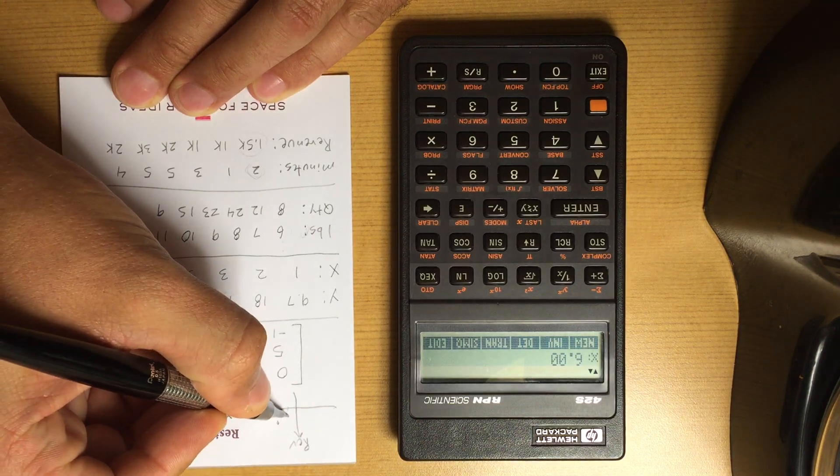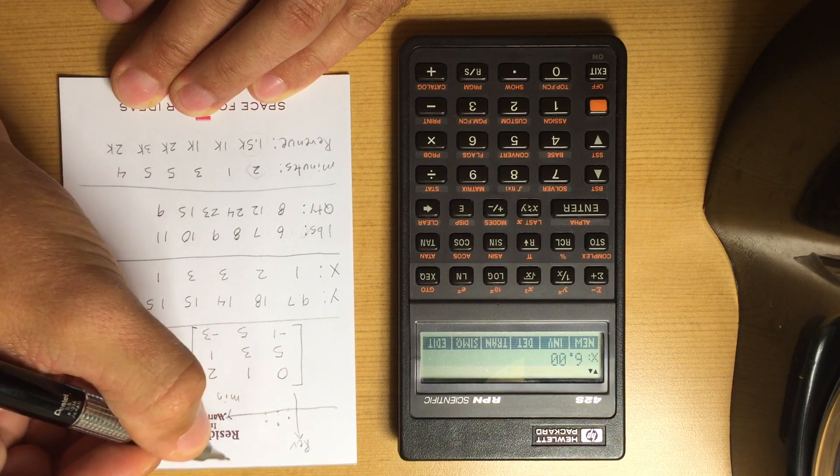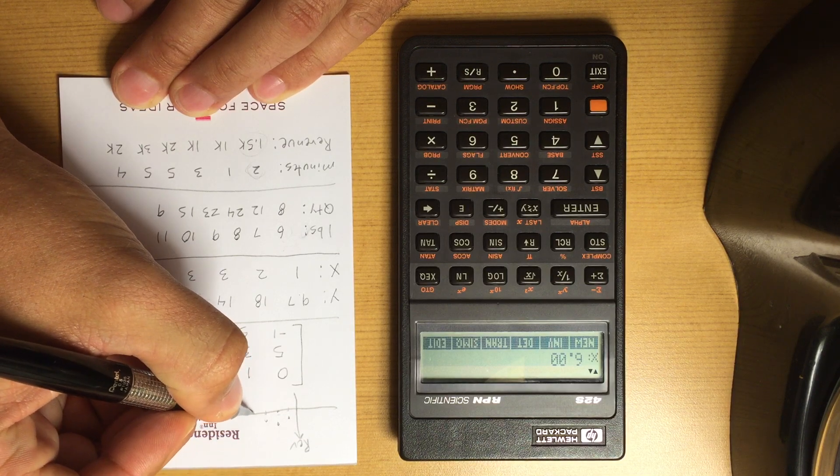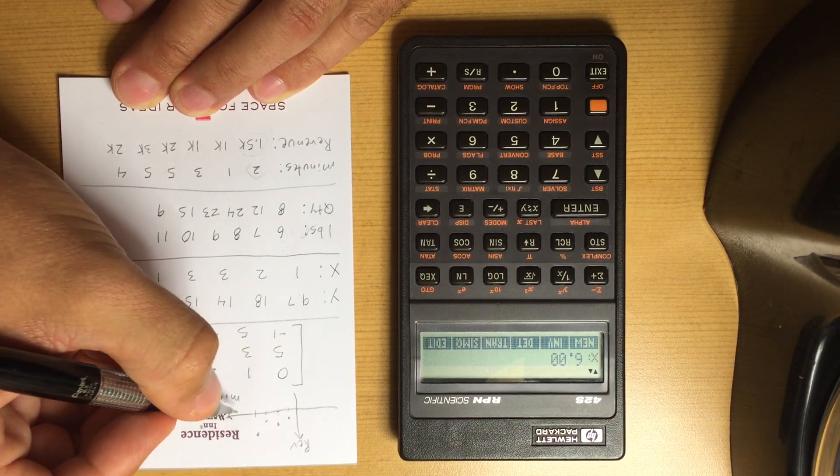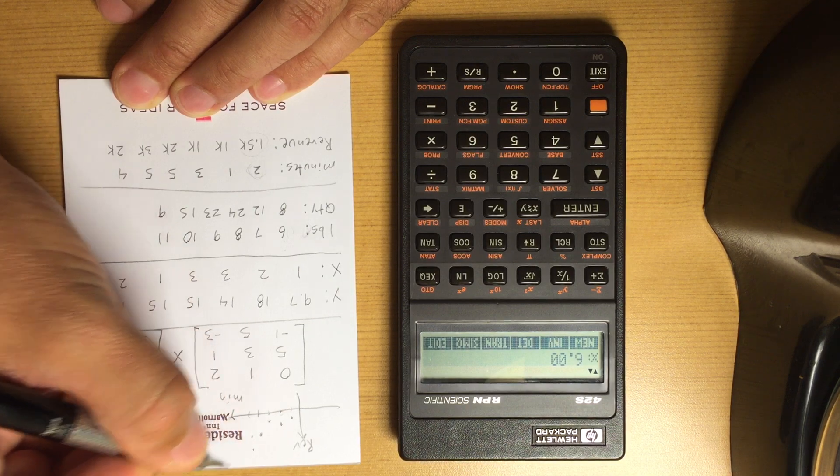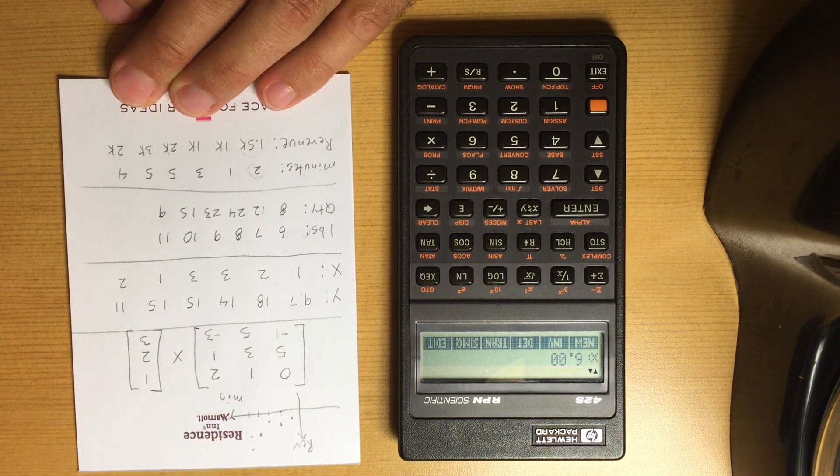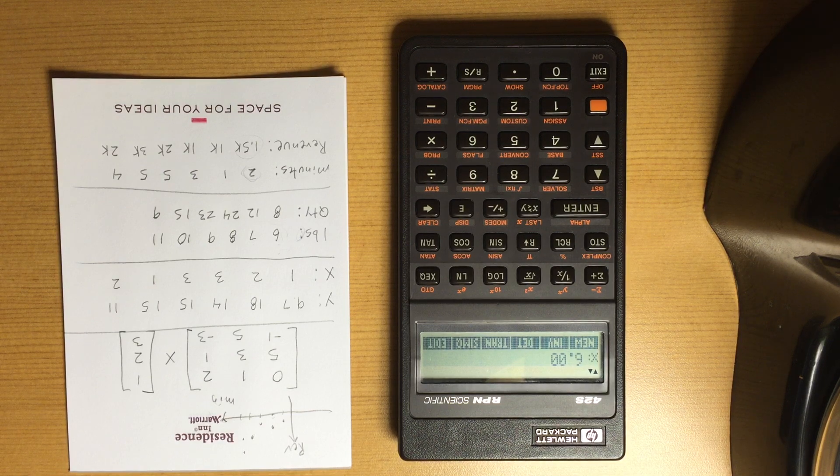So if this is minutes and this is revenue, then at two minutes we got 1.5k, one minute we got 1k, four minutes going out to here we got 2k, and five minutes at 2k, and five minutes at 3k.